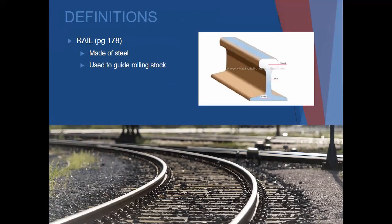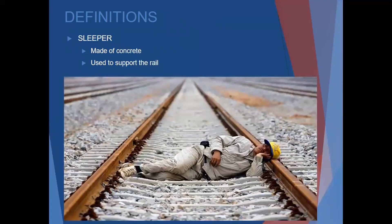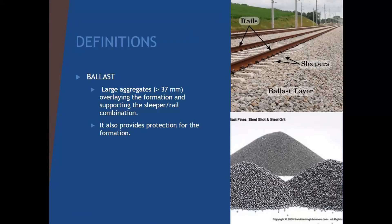There are a couple of definitions to remember. Page 178 for railways will be important. The rail is made of steel and used to guide rolling stock - rolling stock is your wheels on your train. A sleeper is made of concrete and is used to support the rail. Then you get your ballast - it is large aggregates larger than 37 millimeters.